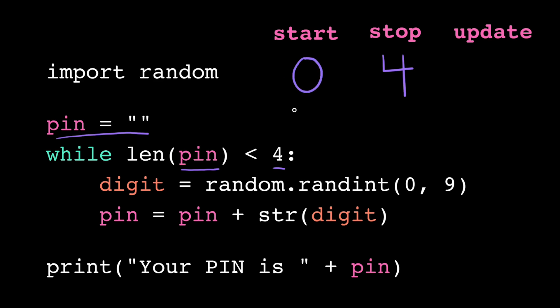Now we just need to look for how pin gets updated inside the loop body. The assignment statement here looks like it's concatenating a new digit onto pin on each iteration, so the length of pin would be increasing by 1 each time. So if we start at 0, we stop when we get to 4, and we increment by 1, this loop will repeat 4 times.